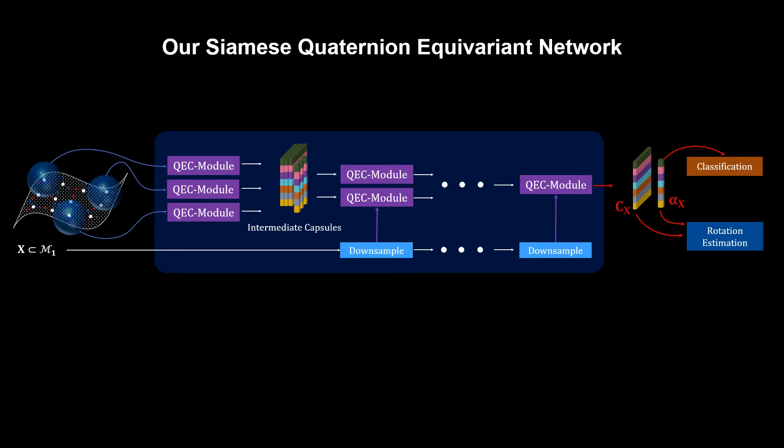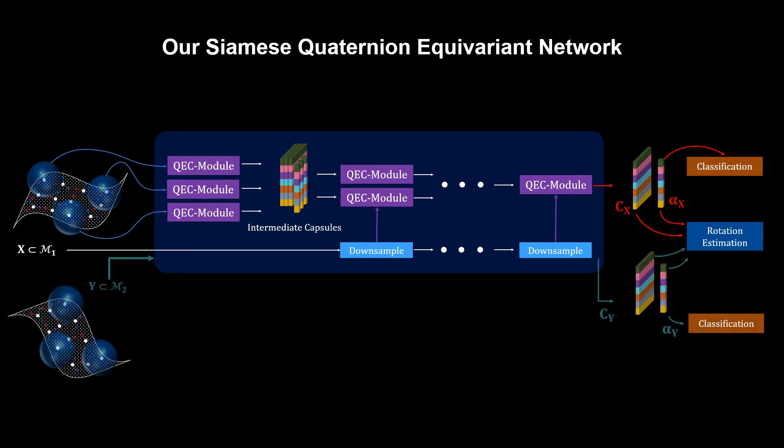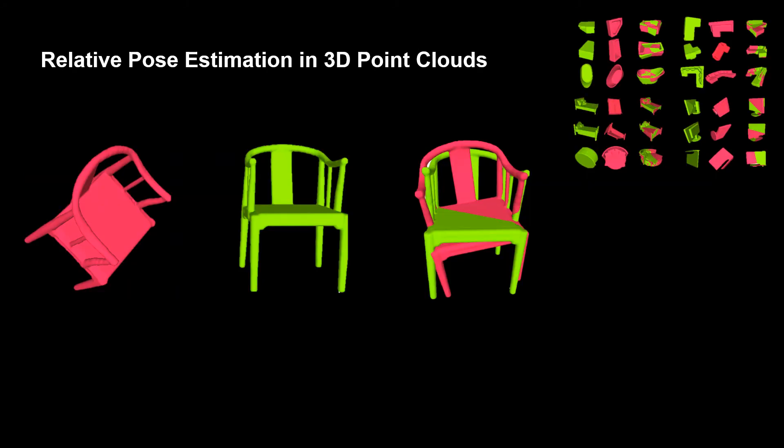We utilize the QEC module within a hierarchy, gradually increasing the size of the receptive field. We train the resulting network using only the classification loss. We also propose a Siamese variant, which allows us to perform relative pose estimation. In addition to canonical rotation estimation, we could perform relative pose estimation by first computing the latent representation of each point set and subsequently computing the relative rotation between the quaternion capsules with the highest activations.